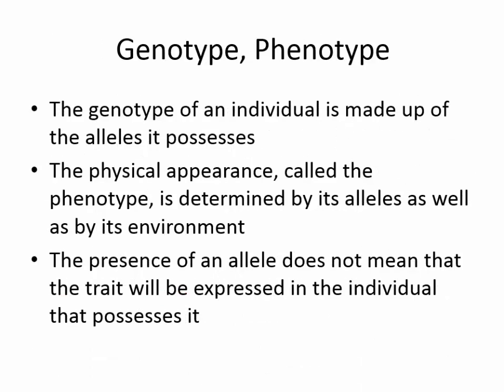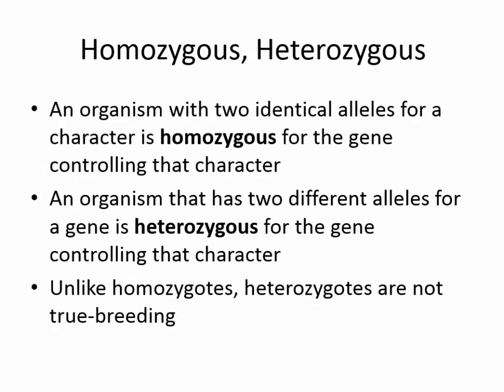More definitions. Genotype and phenotype — what do they mean? The genotype of an individual is made up of the alleles it possesses. The physical appearance, called the phenotype, is determined by its alleles as well as by its environment. The presence of an allele does not mean that the trait will be expressed in the individual that possesses it. An organism with two identical alleles for a character is homozygous; one with two different alleles is heterozygous. Unlike homozygotes, heterozygotes are not true breeding.